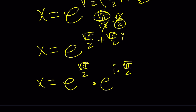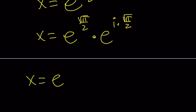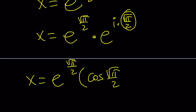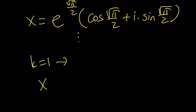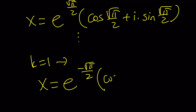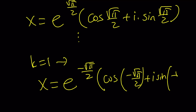This can be written using Euler's formula: e to the power √π/2 times [cosine(√π/2) plus i·sine(√π/2)]. And if you take k equals 1, you get the following: x equals e to the power negative √π/2, multiplied by cosine(−√π/2) plus i·sine(−√π/2). It's pretty much the same thing — you just change the angles. Obviously there are more solutions.